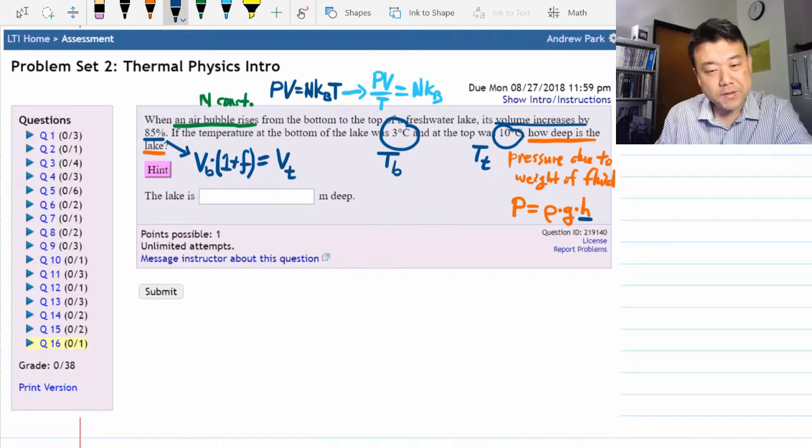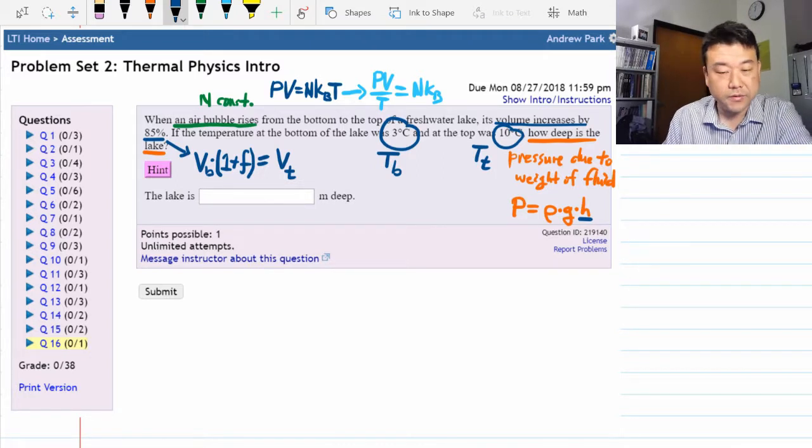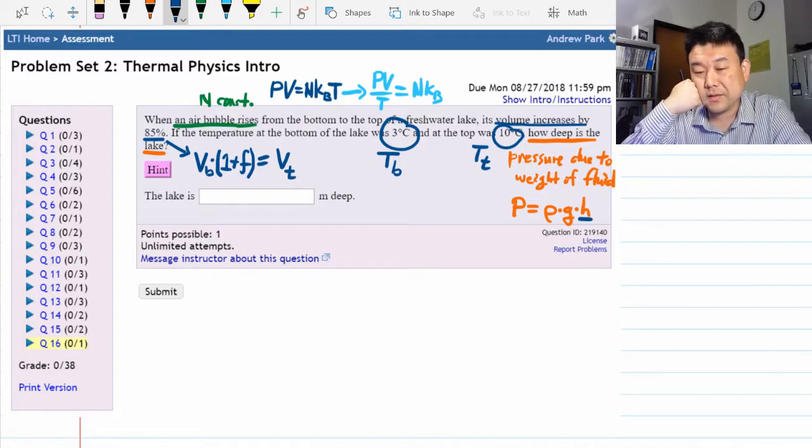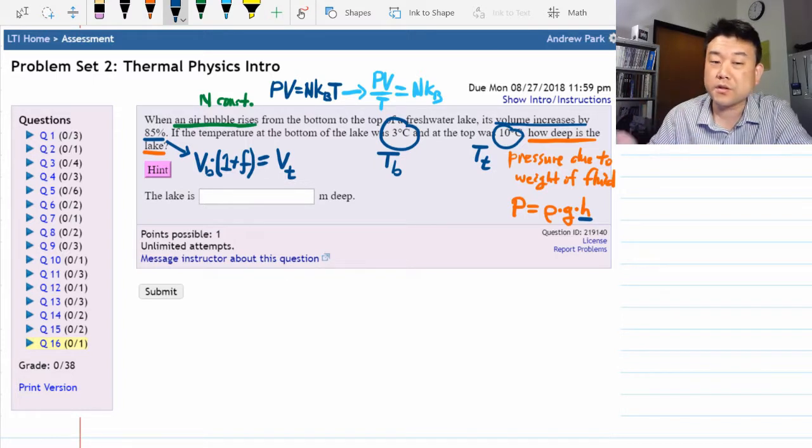So there is some information that is not given to you. One is the pressure at the top. This is the kind of thing you might figure out after having missed this question a couple times. I'll just shortcut to the end.